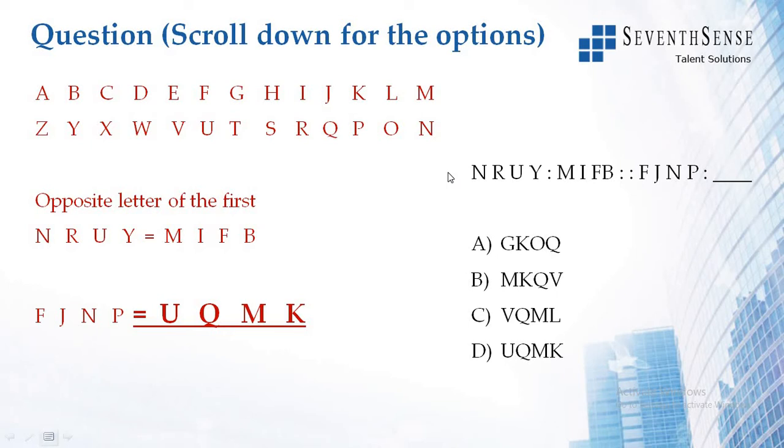Here, when you write down A to Z in 13 to 13 letters, you can observe that it is for opposite letters. That is, the opposite letter of N is M, and R is I. Similarly, U is F, and Y is B. So that is why it is opposite letters. Let us check for FJNP.